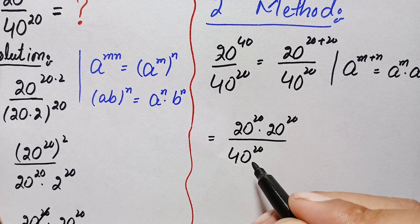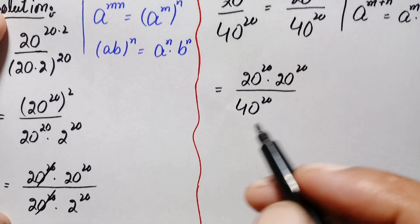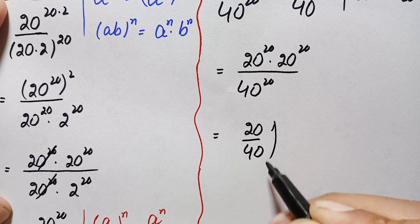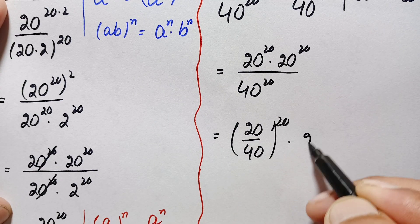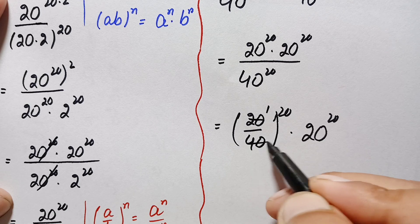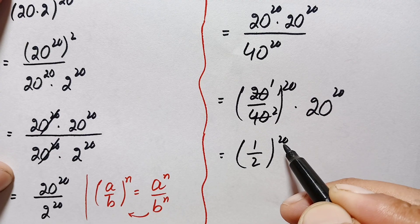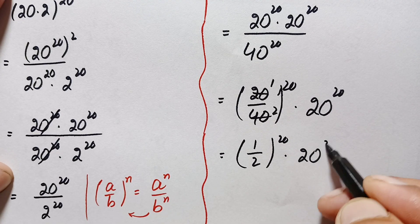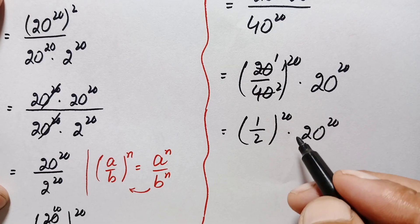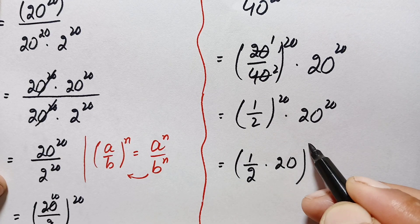These two numbers in the denominator and one in the numerator have the same power, so we use the same-power exponential identity and take the power out as common, dividing the bases. This becomes 20 divided by 40, raised to power 20, times 20 raised to power 20. Simplifying 20 divided by 40 gives 1 divided by 2, so this becomes one-half raised to power 20, times 20 raised to power 20.